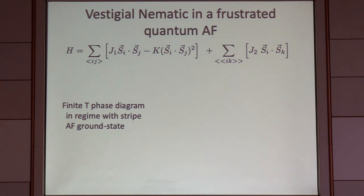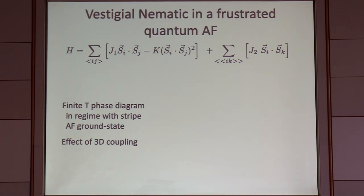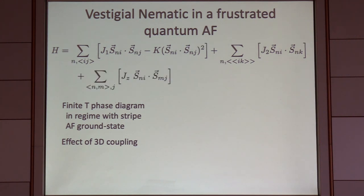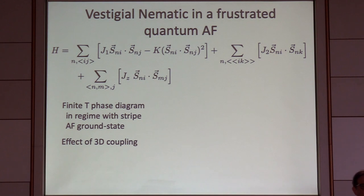The finite-temperature phase diagram in multiple places of this phase diagram is simple to construct and perhaps relevant to this audience. Because of special features of two dimensions, I'm going to modify the model by introducing three-dimensional effects. Here's the three-dimensional version of the same model: N labels a plane, and this part is the same model already written down just within each plane. Then I've turned on a nearest-neighbor antiferromagnetic coupling between spins in neighboring planes, and I'm imagining Jz is small — thinking of a layered system, but not zero.